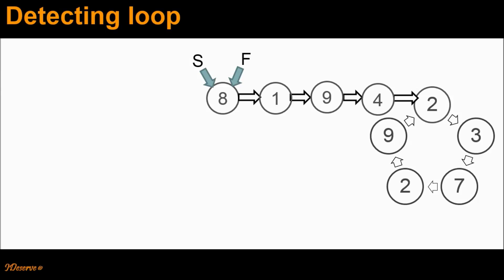Let's try to visualize this algorithm for more clarity. In the first step, we have initialized both pointers S and F to the start of the list. We advance S by one node and F by two nodes until they meet or F reaches the end of the list. If F reaches end of the list, then we know there is no loop in the linked list. So we advance S by one node and F by two nodes, and check if S and F are pointing to the same node. They are not, and F has not reached the end of the list.